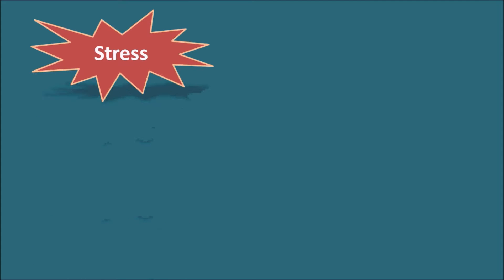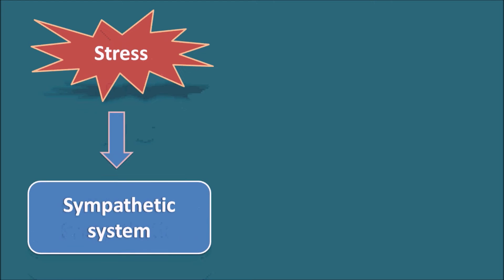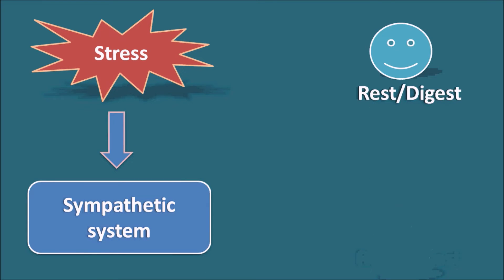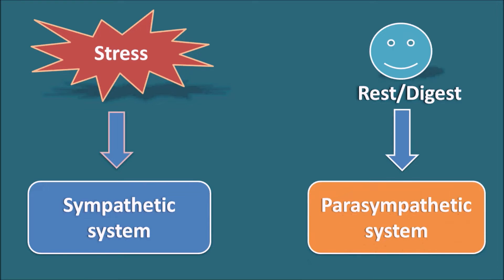Generally, under stressful conditions the sympathetic system is activated, and the parasympathetic system is activated under rest or digest conditions. That's why the action of the sympathetic system is called the fight-or-flight response and the parasympathetic system is called the rest-or-digest response. By remembering that the sympathetic system is activated under stressful conditions, we can easily understand the functional roles of the autonomic nervous system.